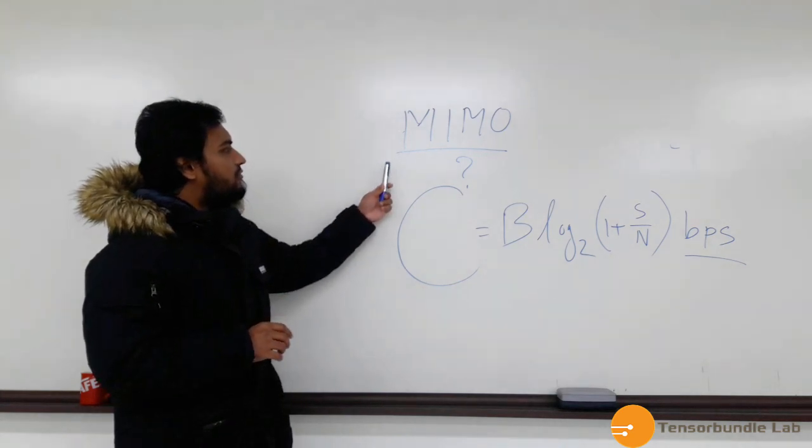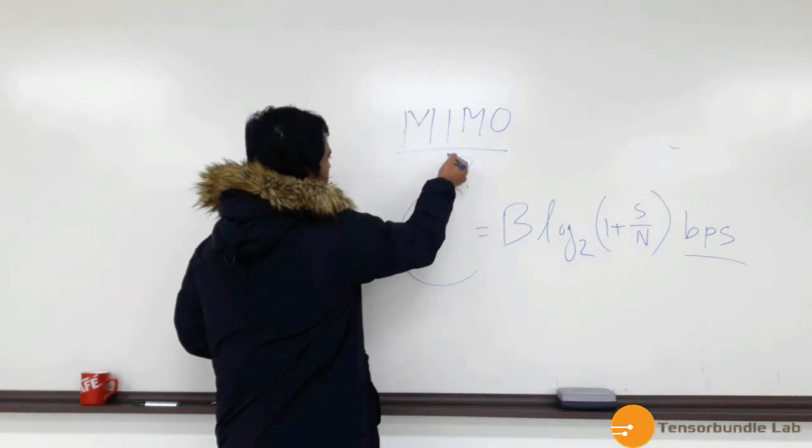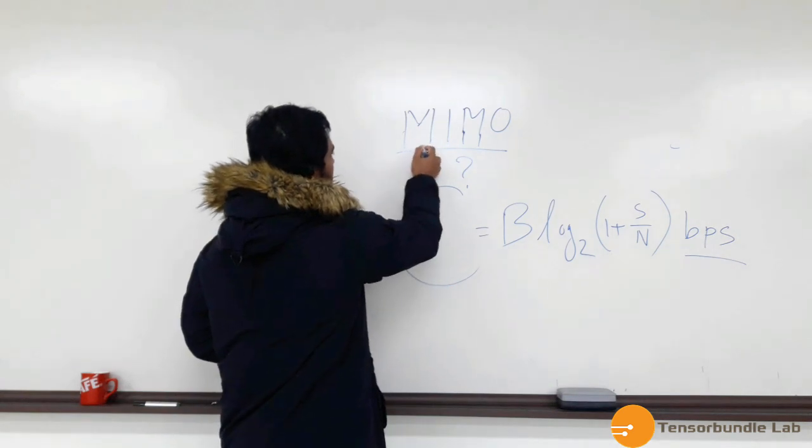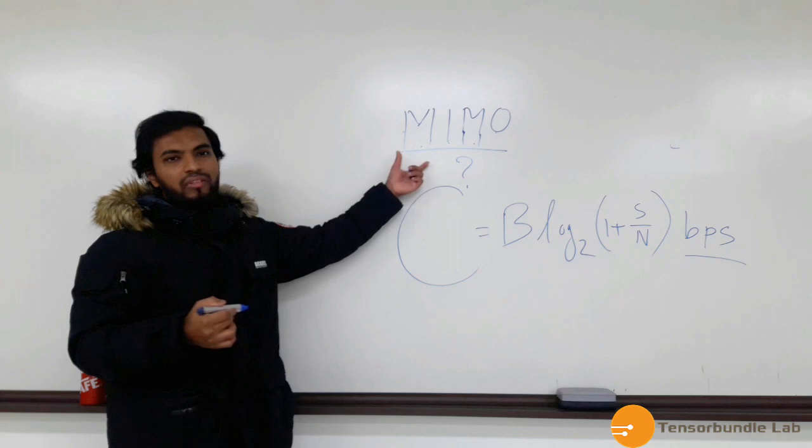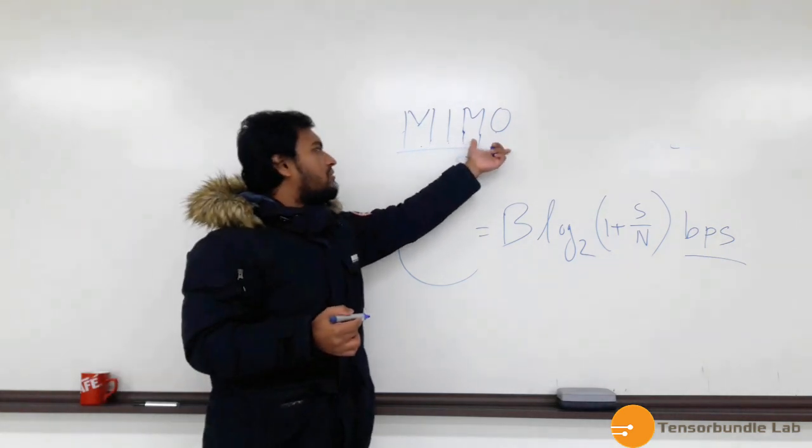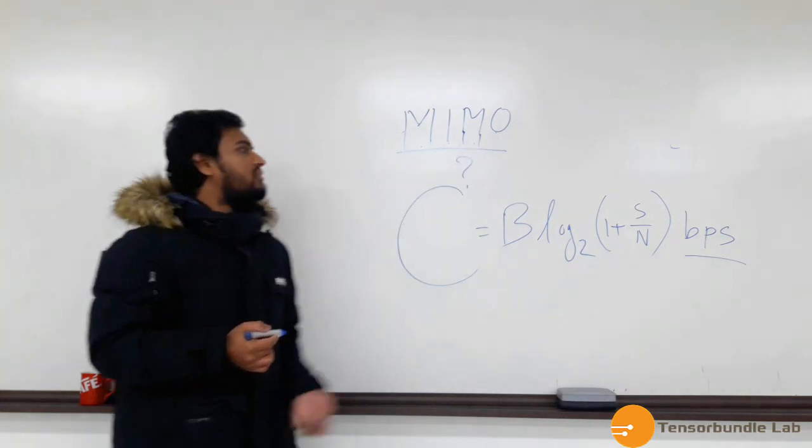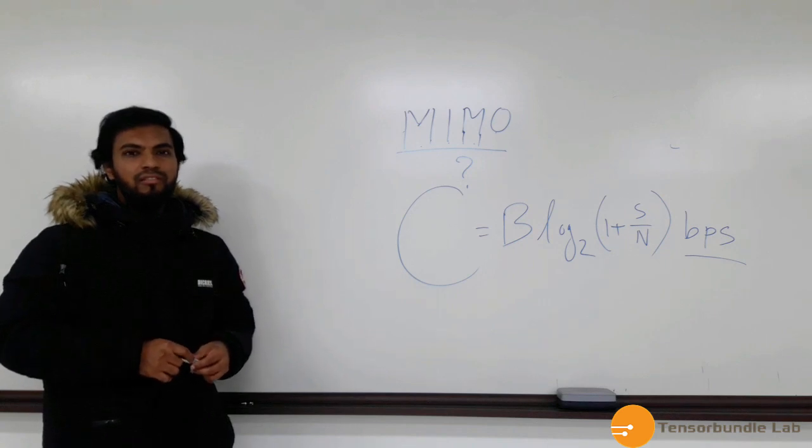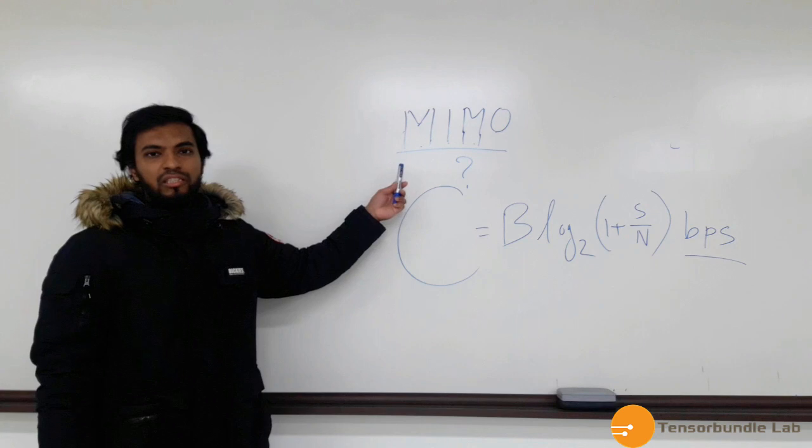And so, for the MIMO antenna, we call it the total or the full name of this abbreviation is multiple inputs and multiple outputs. So we have multiple antenna inputs, or the receiver antennas, and we have multiple output antennas, or transmitter antennas. So that's the motivation of using this MIMO technology, and it is fundamental in the design of 5G antenna.